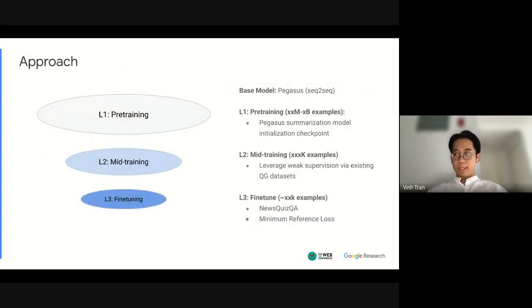To learn this data set there's actually two main challenges. The final fine tuning data set the news quiz data set is not the largest data set so how do we deal with that and secondly how do we handle the multiple correct output targets. So we adopt this sequential training approach where we first take a pre-trained model. We choose the Pegasus summarization model. The intuition here is that summarization might share a lot with the type of standalone question answer generation tasks that we're targeting. Secondly, then we mid-train the model using existing question generation data sets and then we fine-tune the model on our own collected data set.